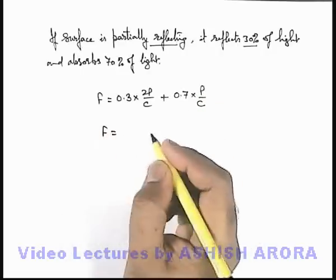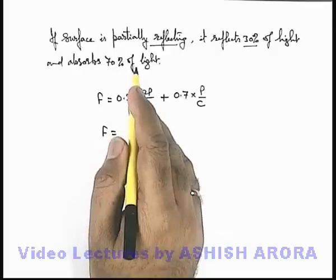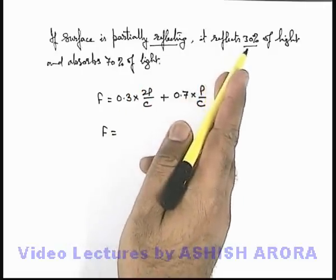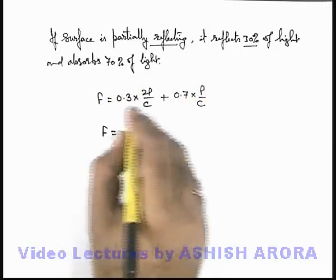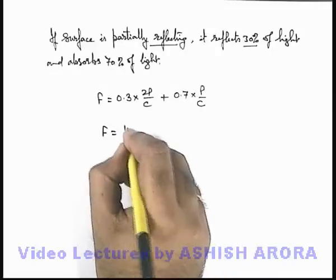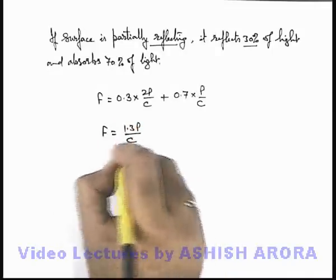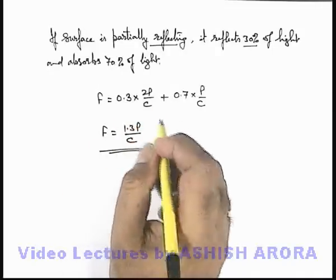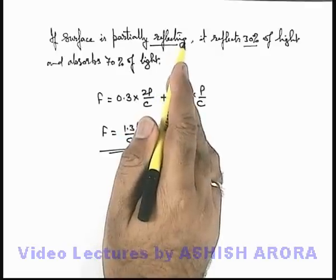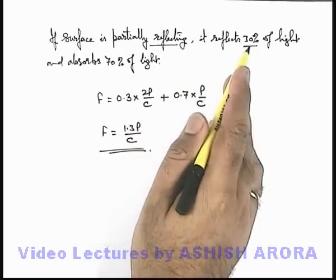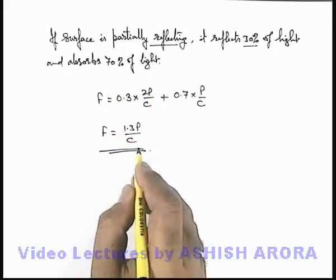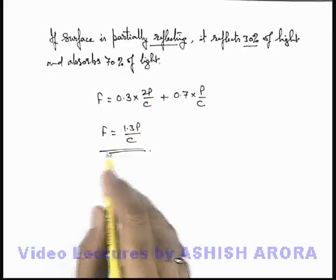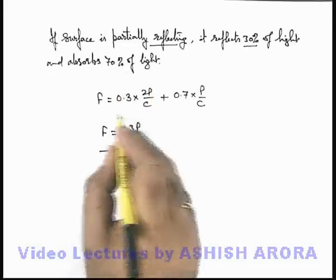So the net force exerted on such a surface of which the reflection coefficient is 0.3 and absorption coefficient is 0.7 can be given as 1.3P/c. That will be the force exerted on such a surface. Now depending on different ratios of reflection or absorption of light, we can easily calculate the value of force exerted by using this logic.